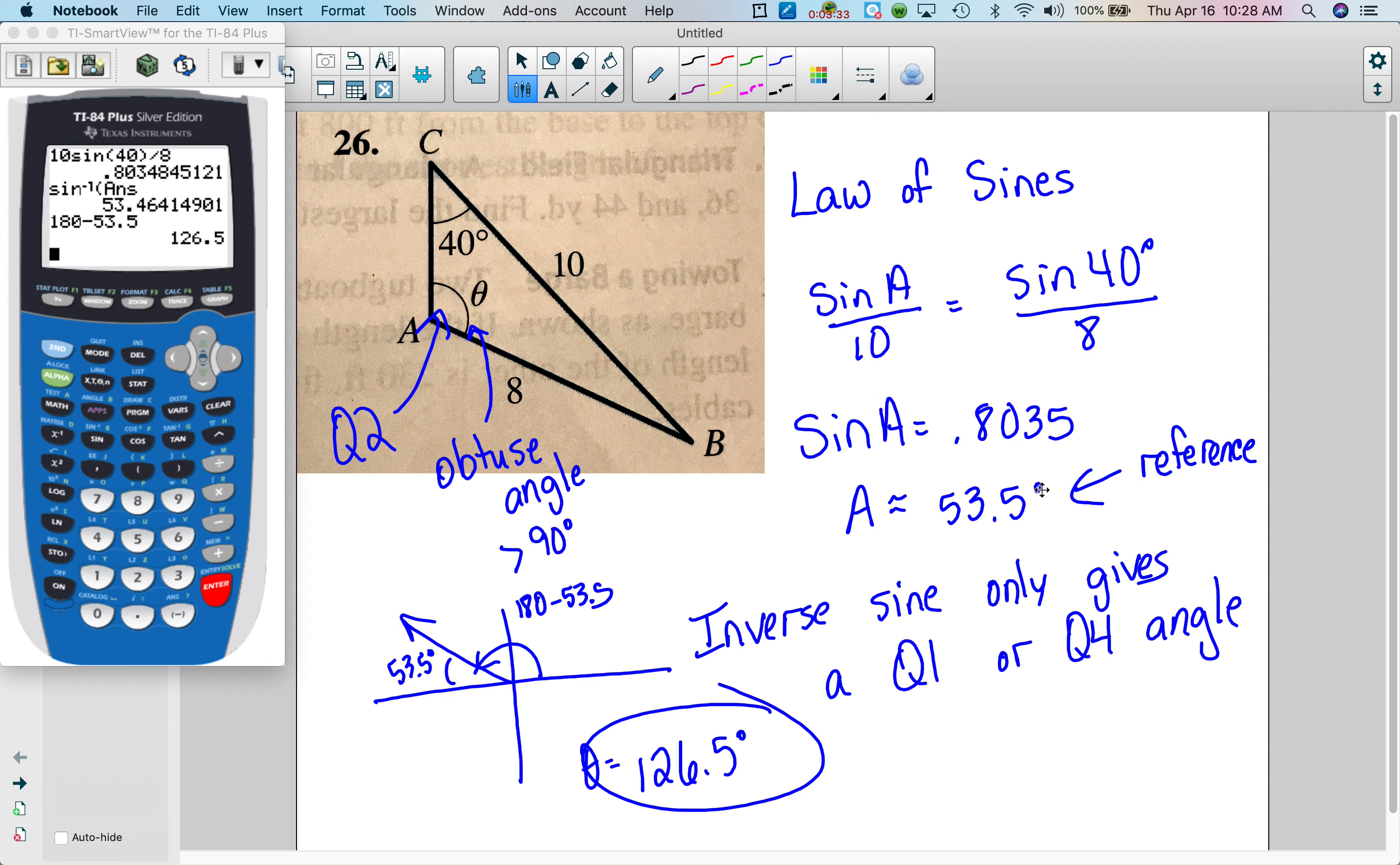This never happens with cosine, because cosine, you always get a quadrant one or quadrant two angle, and so you never have that issue.